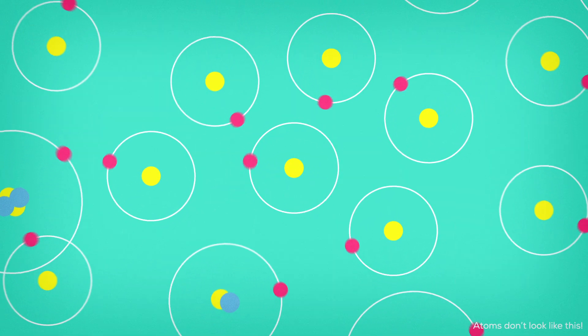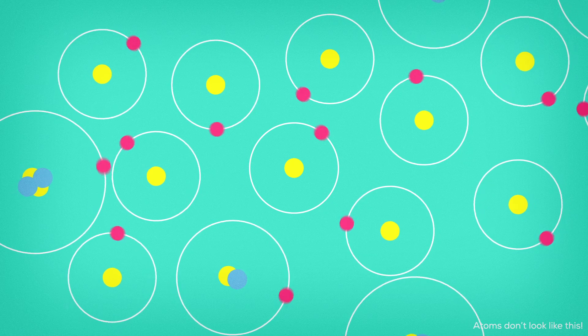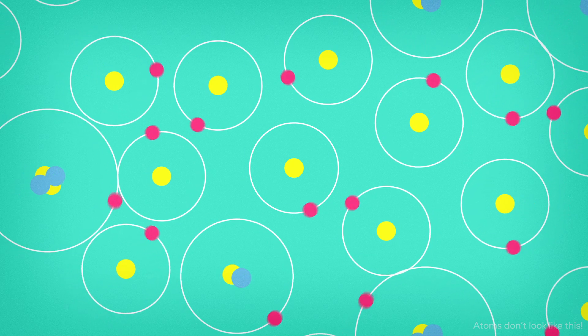But, where did these atoms come from? In the beginning of the universe, there were mostly hydrogen and helium atoms. Enormous gas clouds formed over millennia and grew denser and denser until they collapsed under their own gravity, giving birth to the first stars.